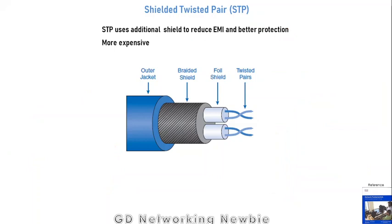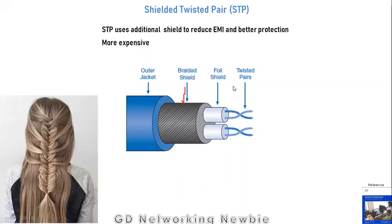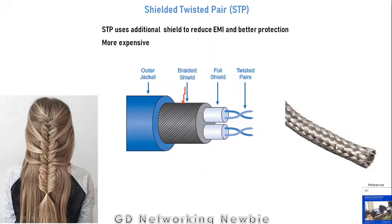Since UTP means unshielded twisted pair, the question arises: do we also have shielded twisted pair? Yes, we do. The difference is the addition of a braided shield. This shield is provided to reduce the effect of electromagnetic interference, making the cable more efficient against EMI. However, because of this extra shield, the cable is more expensive and not as popular as UTP.